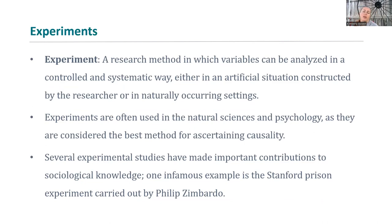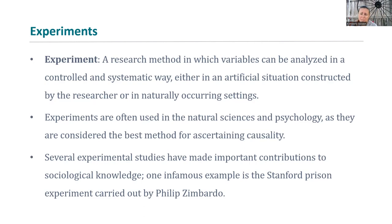An experiment is a research method where variables are analyzed by controlling one variable and then systematically changing another. They're also used in natural sciences and psychology and are considered the best method for asserting causality. Several social experiments have been done, including some really negative ones — like the Stanford Prison Experiment — where really troubling social experiments caused lasting trauma and impact on the subjects.